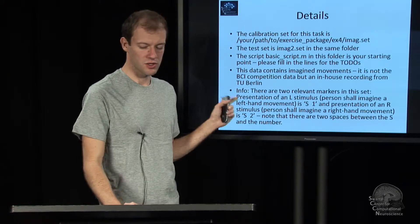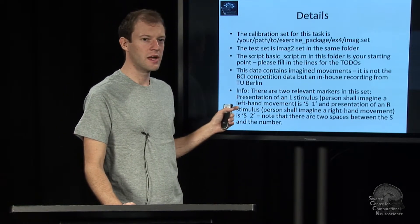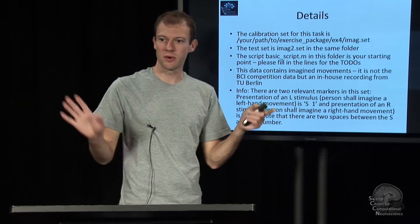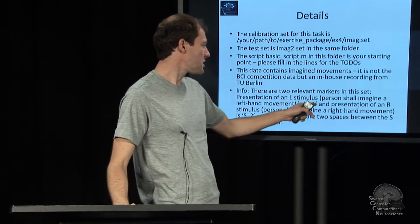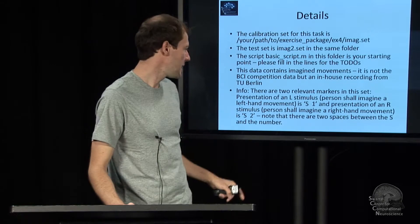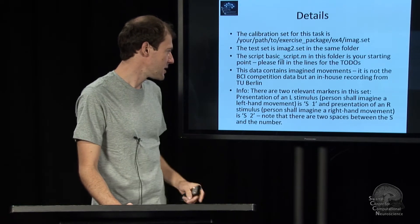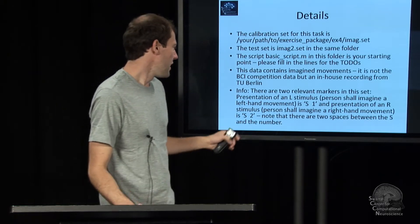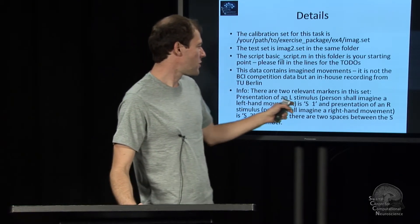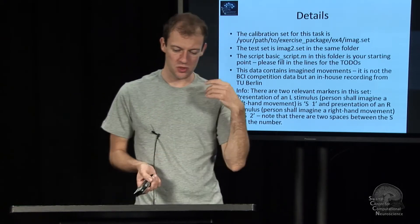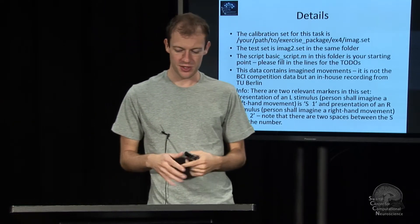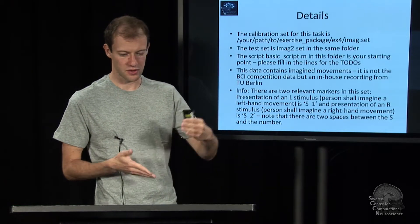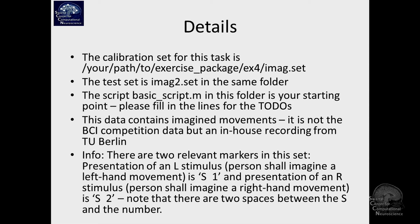There are two markers in this dataset — it's not the BCI competition dataset, though you could use that if you wanted to. One marker is called S1 with two spaces, and the other is called S2 with two spaces; this is Brain Products marker labeling. One encodes that the person is supposed to imagine a left hand movement, and the other encodes imagining a right hand movement. You can assume it takes about three and a half to four seconds after the stimulus until the person is done imagining. It's closely related to the data for which power spectral plots with red and green were shown initially.